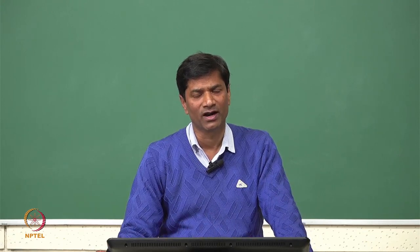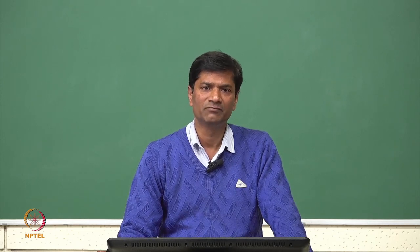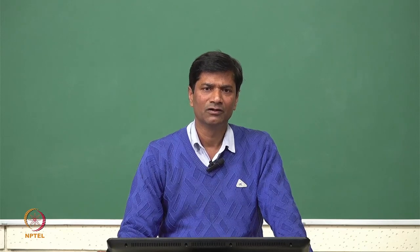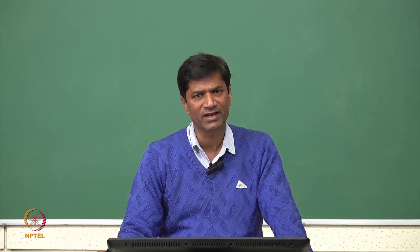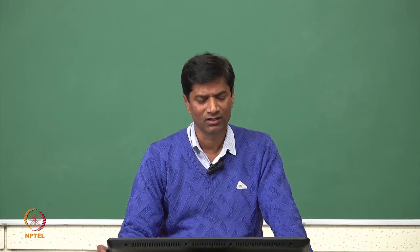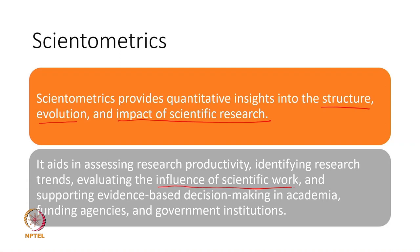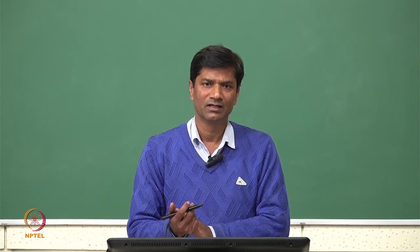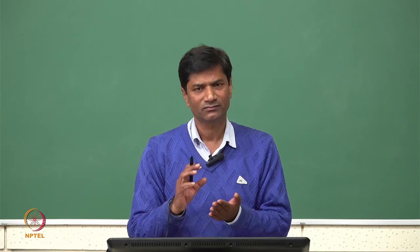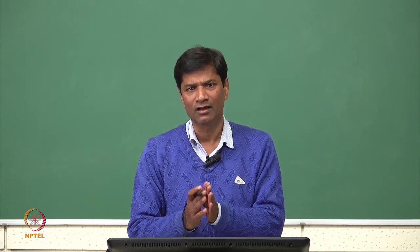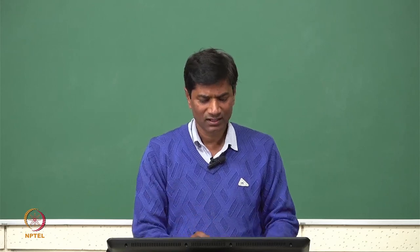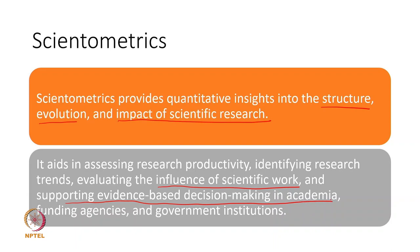Scientometrics is very much required for research productivity and for quantitatively evaluating and influencing scientific work — what the scientific work is influencing in our society, what is the influence on other domains of science. When dealing with Scientometrics, we are trying to find out what is the influence of research A on research B and vice versa.